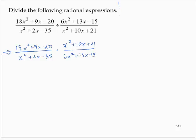Now I'm going to go ahead and do a little side work for these factorizations. 18x² + 9x - 20. 18 times 20 is negative 360. So we need to multiply to negative 360 and add to 9.